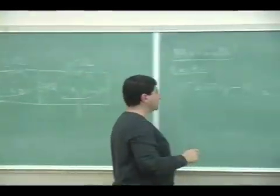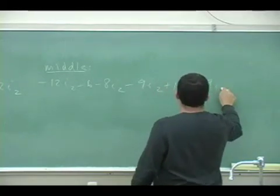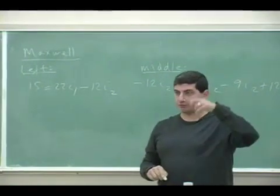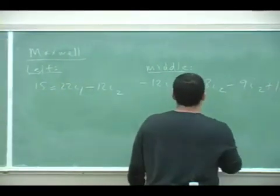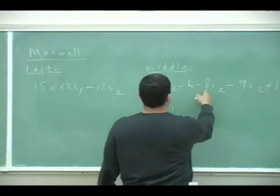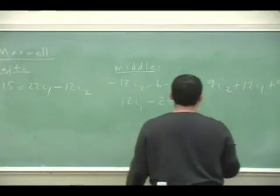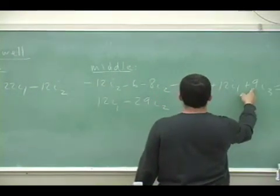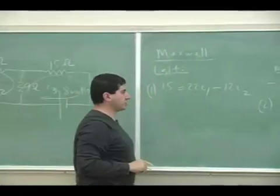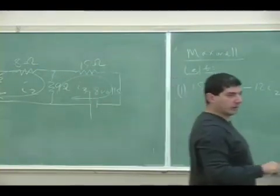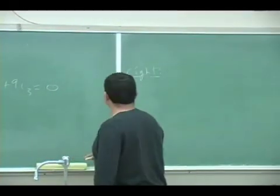You're going against I1 and I3, so you're doing plus 12I1 plus 9I3 is equal to zero. Whichever current is not part of your primary loop is positive. So I have 12I1, then negative 12, negative 8 is negative 20, and negative 9 gives negative 29I2. So I have 12I1 minus 29I2 plus 9I3 equals 6. That's my second equation. The first equation didn't change, but the second equation changed.